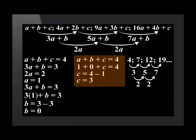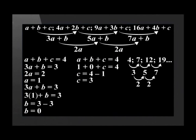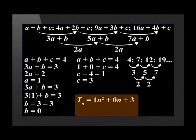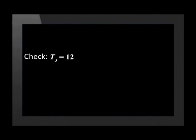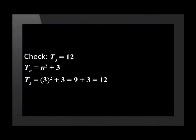The last step is to put the values into the general term, giving us Tn equals 1n squared plus 0n plus 3. Simplified, this reads as Tn equals n squared plus 3. You should always check if your general term is correct by finding one of the terms in the given sequence. For example, term 3 is 12. To check, substitute n equals 3 into the equation: 3 squared plus 3 is 9 plus 3, which equals 12. So we get the right answer, and our general term is correct.